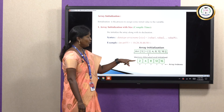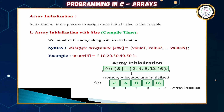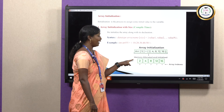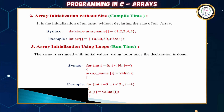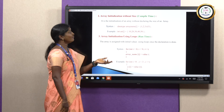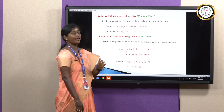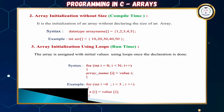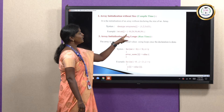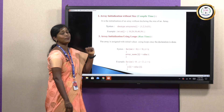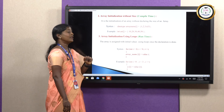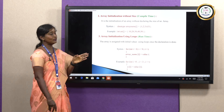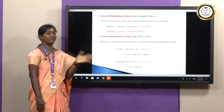The second type is array initialization without size. You can declare multiple values without mentioning the size of the array. The syntax is: data_type array_name[] = {values}. For example, int ARR[] = {1, 2, 3, 4, 5} or int ARR[] = {10, 20, 30, 40, 50}. Both these types use compile-time declaration.